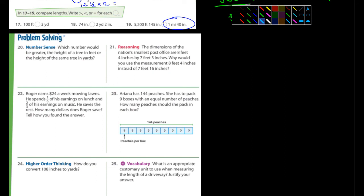Which number would be greater? I'm on number 20 here. The height of a tree in feet or the height of the same tree in yards? Now, they're talking about numbers. So, which one's a smaller measurement? Is it feet or yards? I think you can answer that one. 21. The dimensions of the nation's smallest post office are 8 feet 4 inches by 7 feet 3 inches. Why would you use the measurement of 8 feet 4 inches instead of 7 feet 16 inches? Well, why would you use 16 inches? That wouldn't make any sense. Because 16 inches is equal to 1 foot. What's left over? 4 inches. That's why. Wouldn't make any sense.